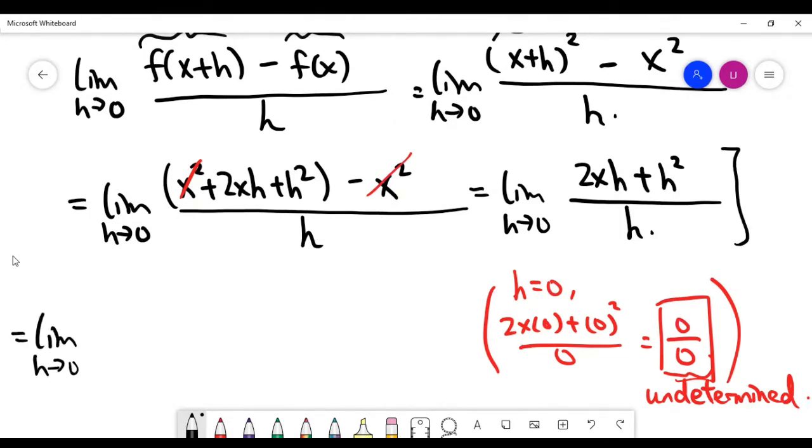Let's do it here. Limit h goes to zero. Now the bottom is just h. And the top, by high school algebra, you're able to take a common factor h from the two terms. After taking h out, the first term becomes 2x, plus the second term is just h. And now you see h is cancelled.